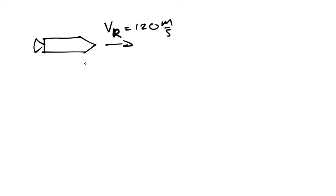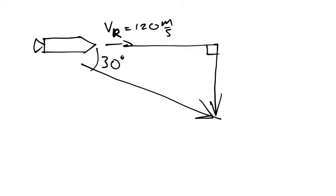The rocket wants to change its direction by 30 degrees. Here's our initial velocity, here is our change in velocity, here's a right angle, and this angle is 30 degrees.